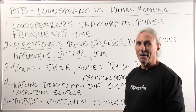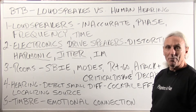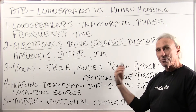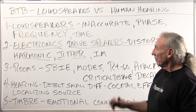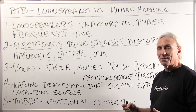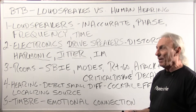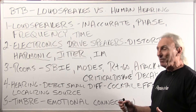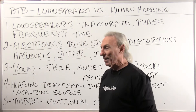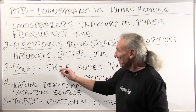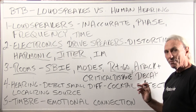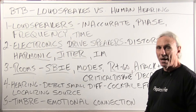So loudspeakers by definition are fraught with distortions and all kinds of issues, and then the electronics that drive them — we have all kinds of issues. So you combine the two sets of distortions, and then we have to listen to those things inside of our rooms, and our rooms have all kinds of distortions: speaker boundary interference effect, room modes, RT60 reverberation times.